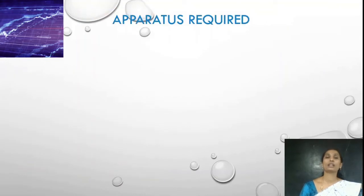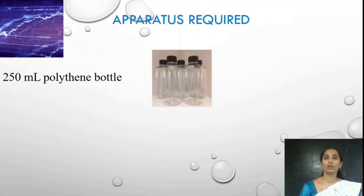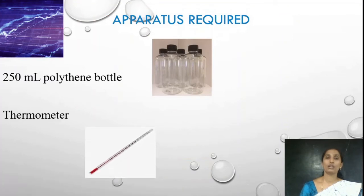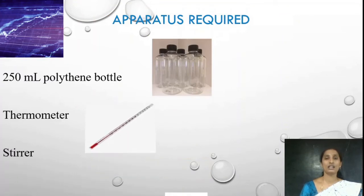Coming to apparatus required: we require a 250 ml polythene bottle, a thermometer and a stirrer, along with 5 grams of potassium nitrate.